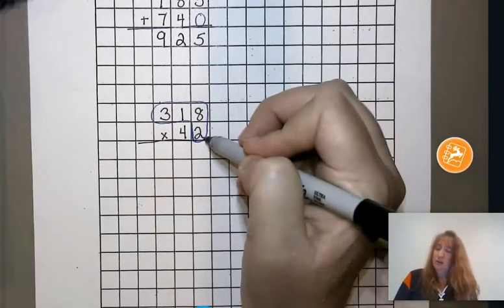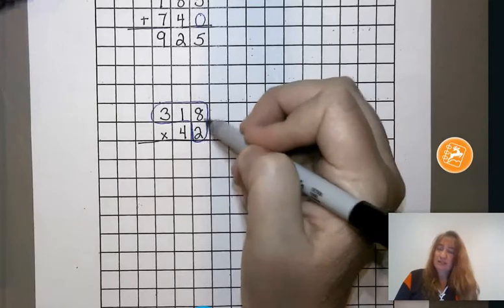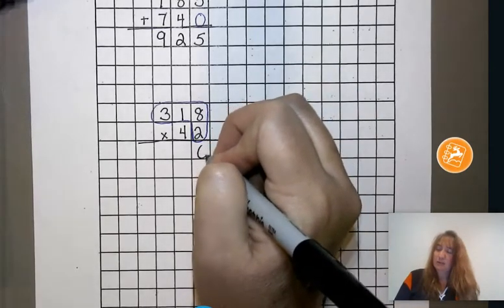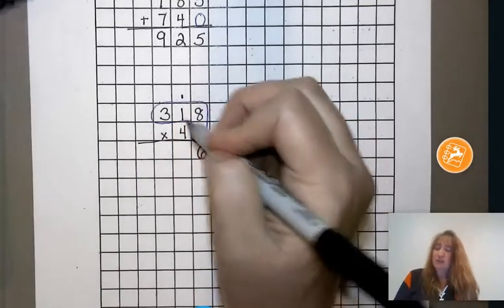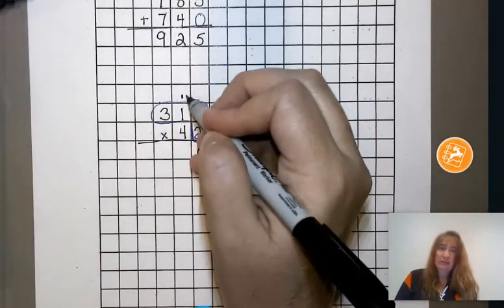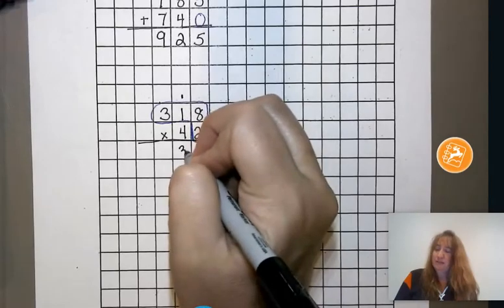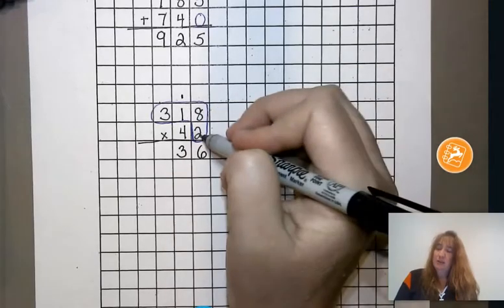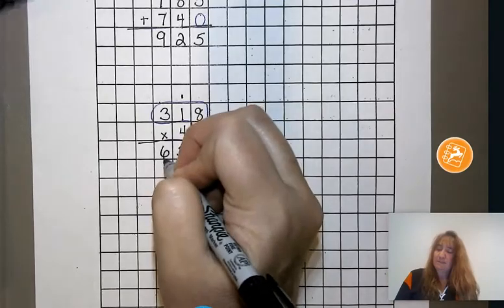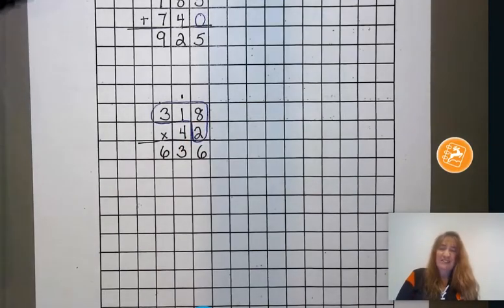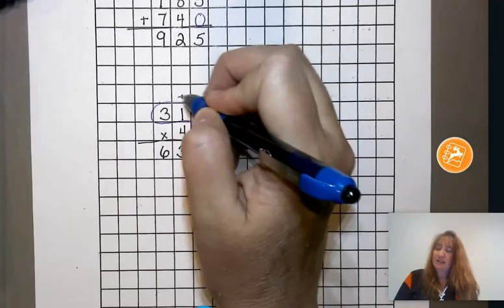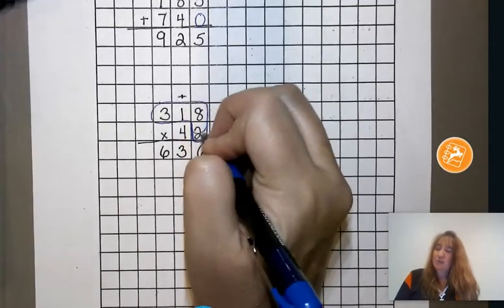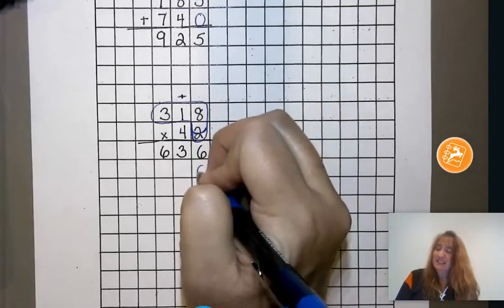So we're going to take 2 times 8 is 16. We're going to split that above and below the line. 2 times 1 is 2 plus the 1 I carried would be 3. And then 2 times 3 is 6. And then going back to our story, we have crossed out anything I carried, give her a beautiful collar, and she's so happy she lays an egg.